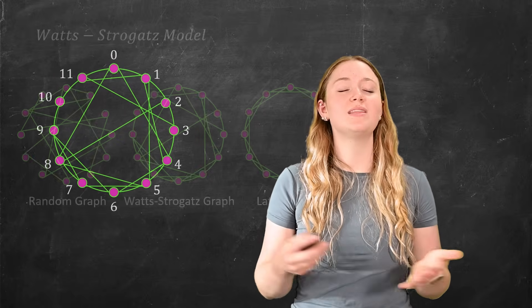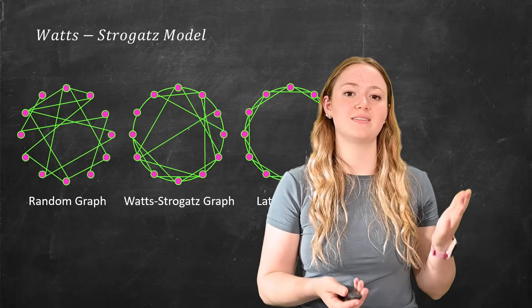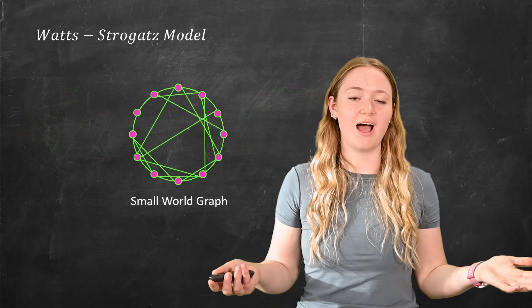So when we combine these two things, we get the best of both worlds, having that high clustering coefficient with short path length. Or in other words, we get a small world graph.